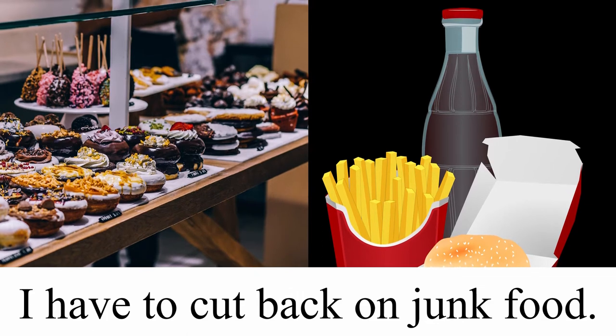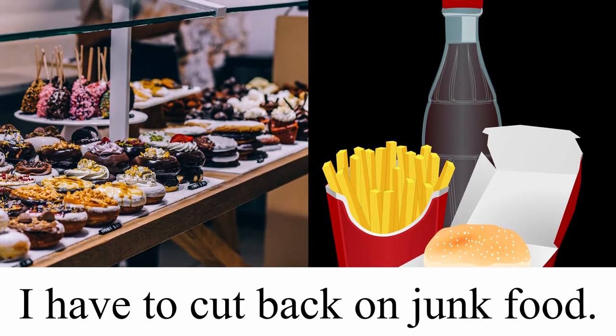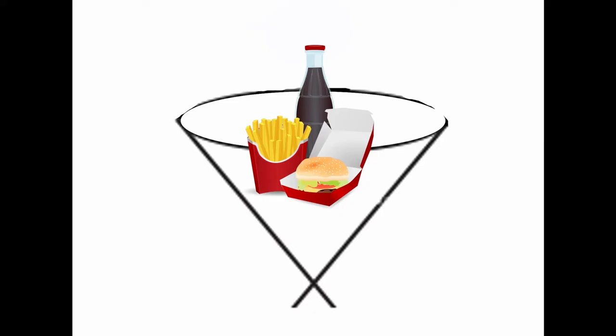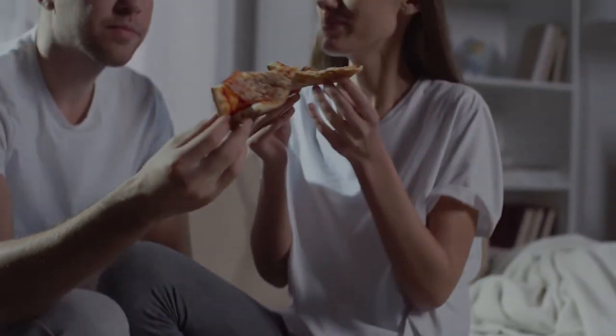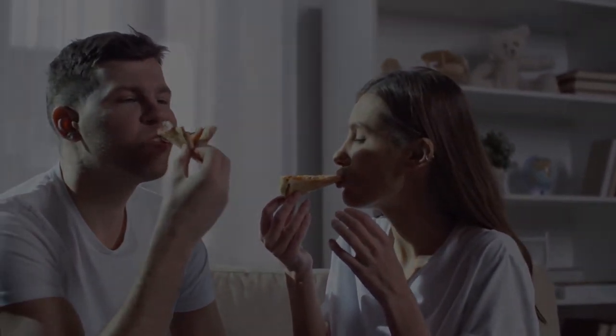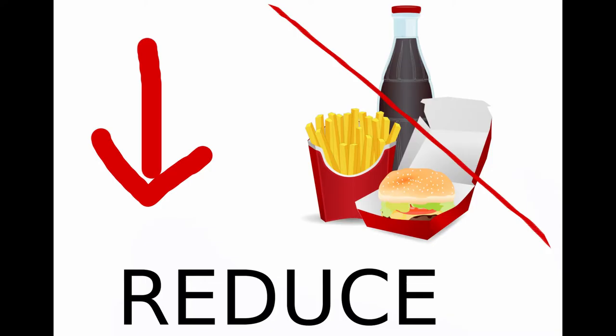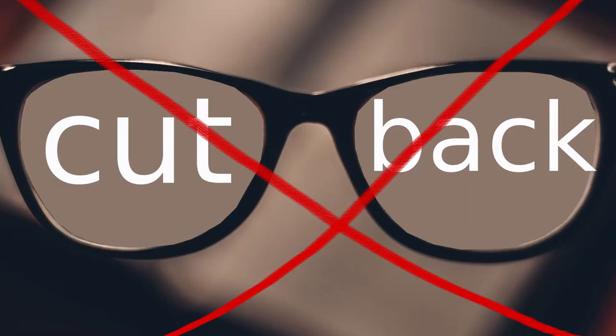Our next example, I have to cut back on junk food. Here, the topic is junk food. In this sentence, the person is eating more junk food than they think is acceptable, so they either want to or have to eat less of it. And that is what cut back means, to reduce the amount of something. Now, our focus here isn't on cut back, so we won't worry about how that works. But why do we use on after cut back?